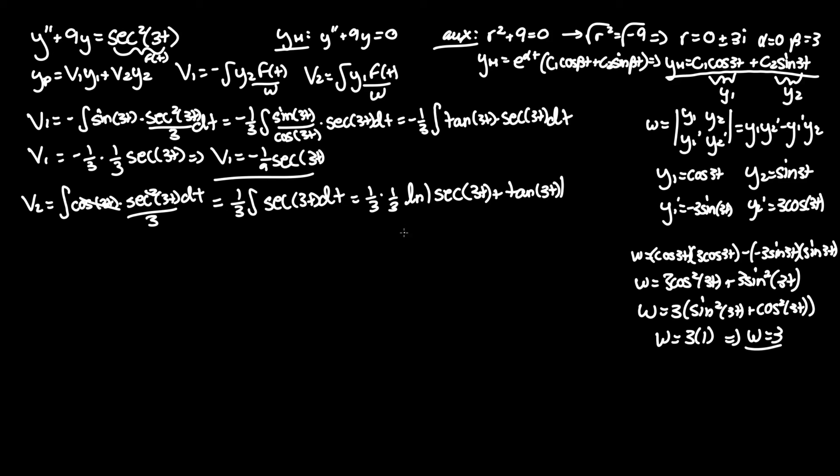There's a video of black pen red pen, I believe, doing the proof of this, and he literally multiplies it by secant tan. So it's not something you can just do logically, it's kind of a really annoying proof. So v2 now equals one ninth ln absolute value of secant 3t plus tan of 3t. And that's it.